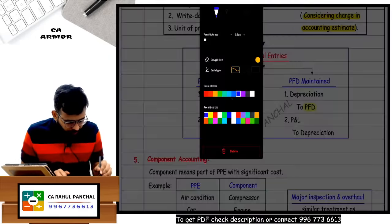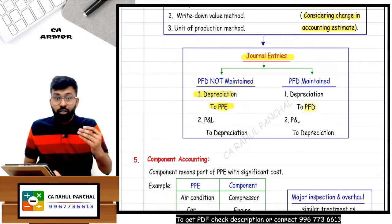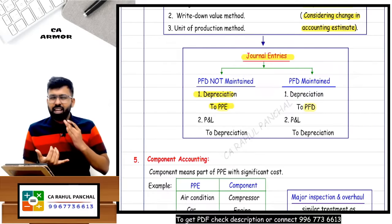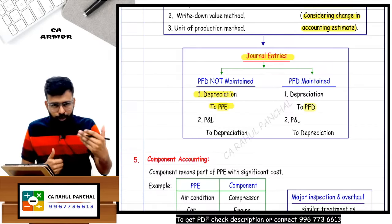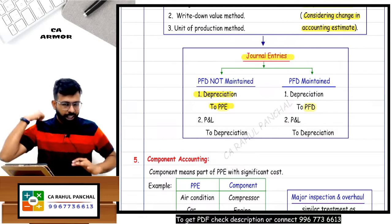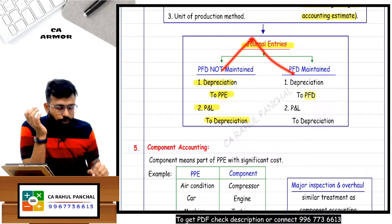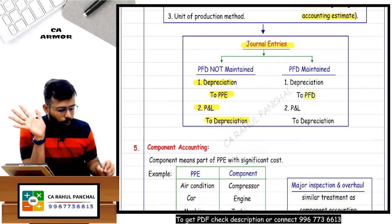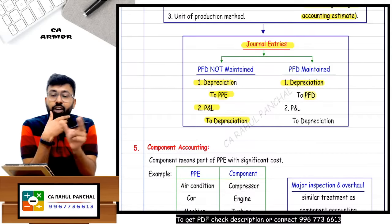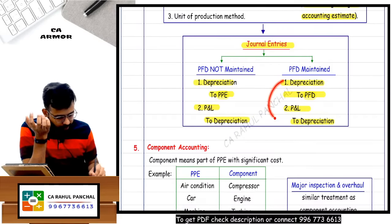Journal entry for depreciation: depreciation to PPE. Sometimes you don't want to reduce the fixed asset account directly, so you create one account - accumulated depreciation or provision for depreciation. The entry is: depreciation debit, accumulated depreciation (provision for depreciation) credit, and then depreciation is transferred to P&L account.